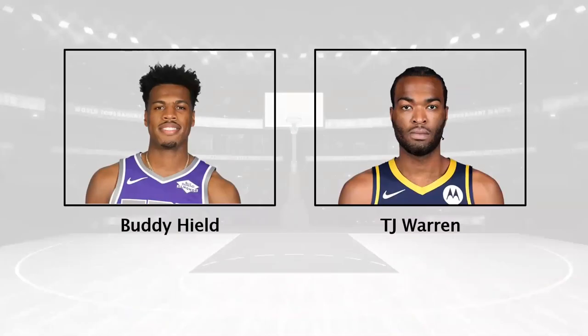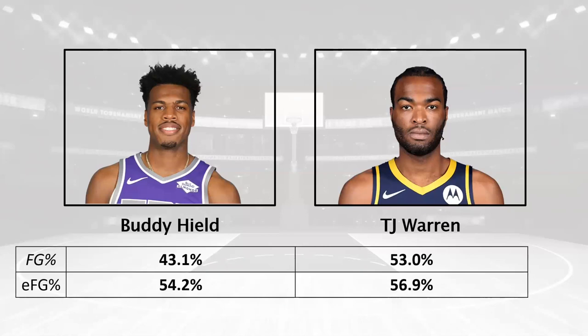Now with that context, let's look at how effective field goal percentage compares. Where there was a 10 percent gap in standard field goal percentage, there's now just a two-and-a-half percent gap in effective field goal percentage. By virtue of Buddy Hield taking so many three-point jump shots — which come from a farther distance and lower his raw FG% — the 50 percent extra point value per make raises his effective field goal percentage, bringing it much closer to TJ Warren's.